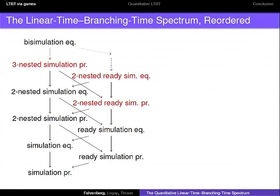I should explain that I'm not actually sure how new this is. Some people tell me that this is kind of folklore knowledge. I didn't really find it written down anywhere — maybe it's obvious, but for us it wasn't. Now, there is some space on the right in the spectrum, and you remember that the linear time branching time hierarchy was a bit more complicated than what I've shown. How do we get the other things?